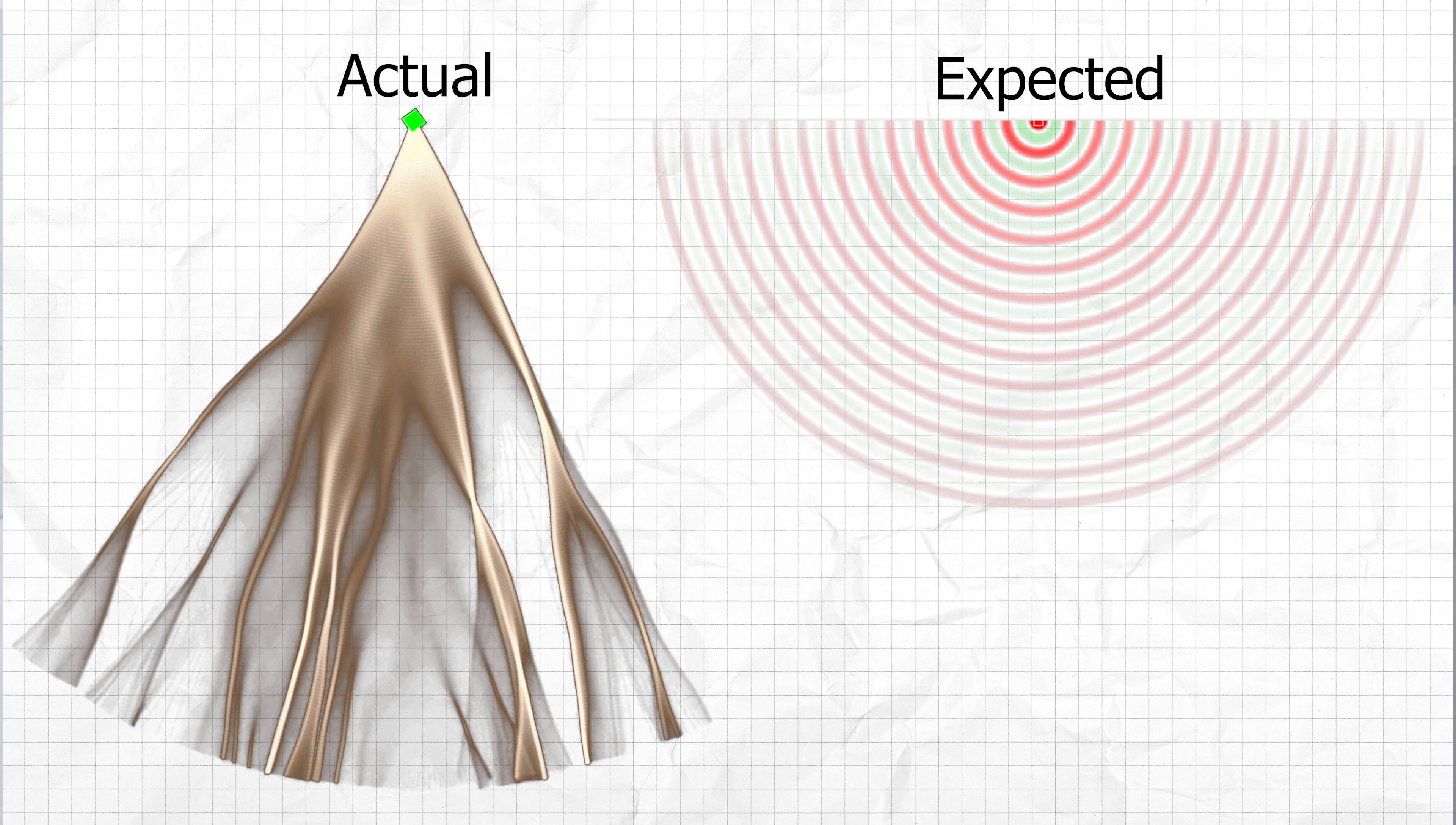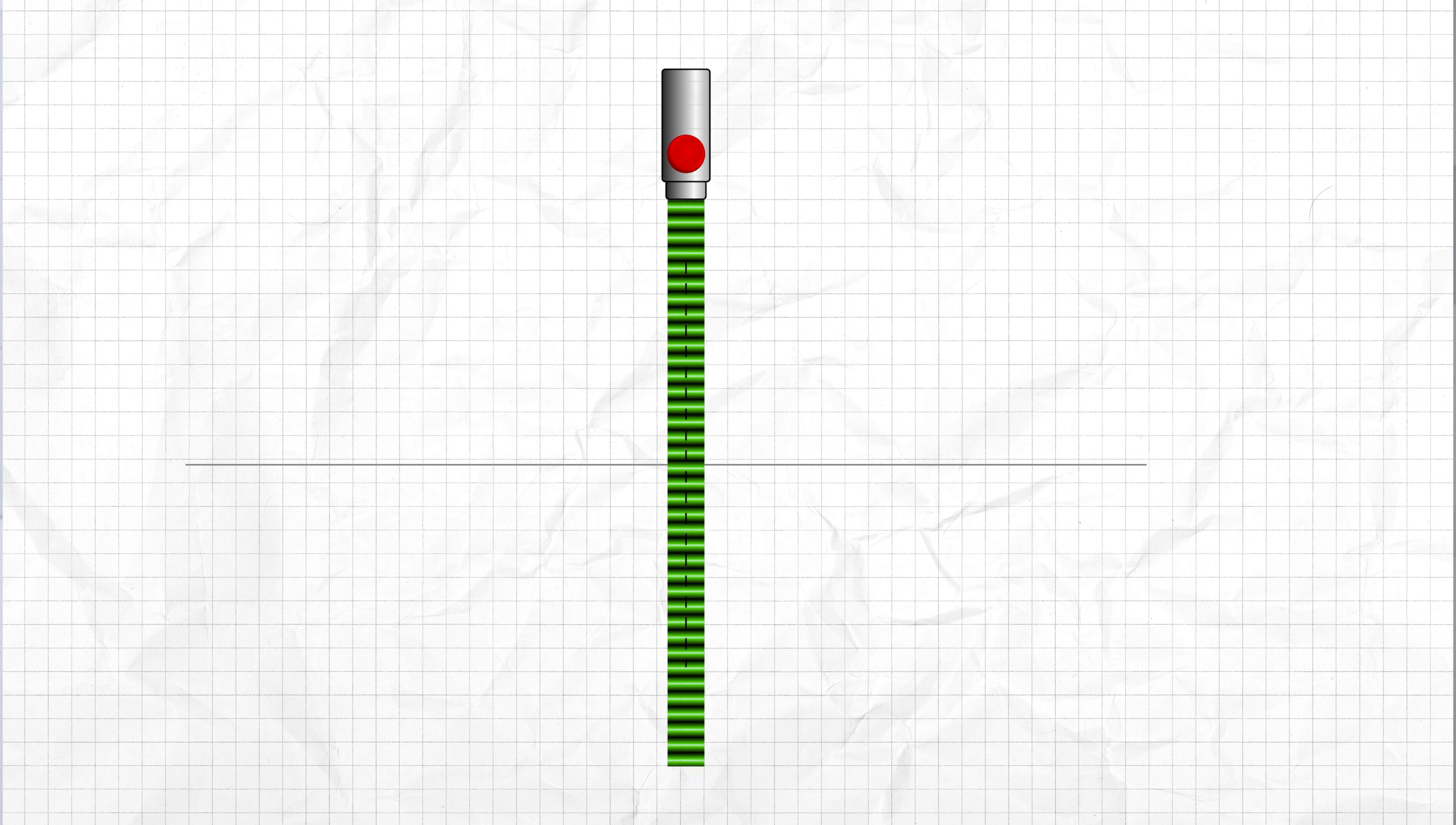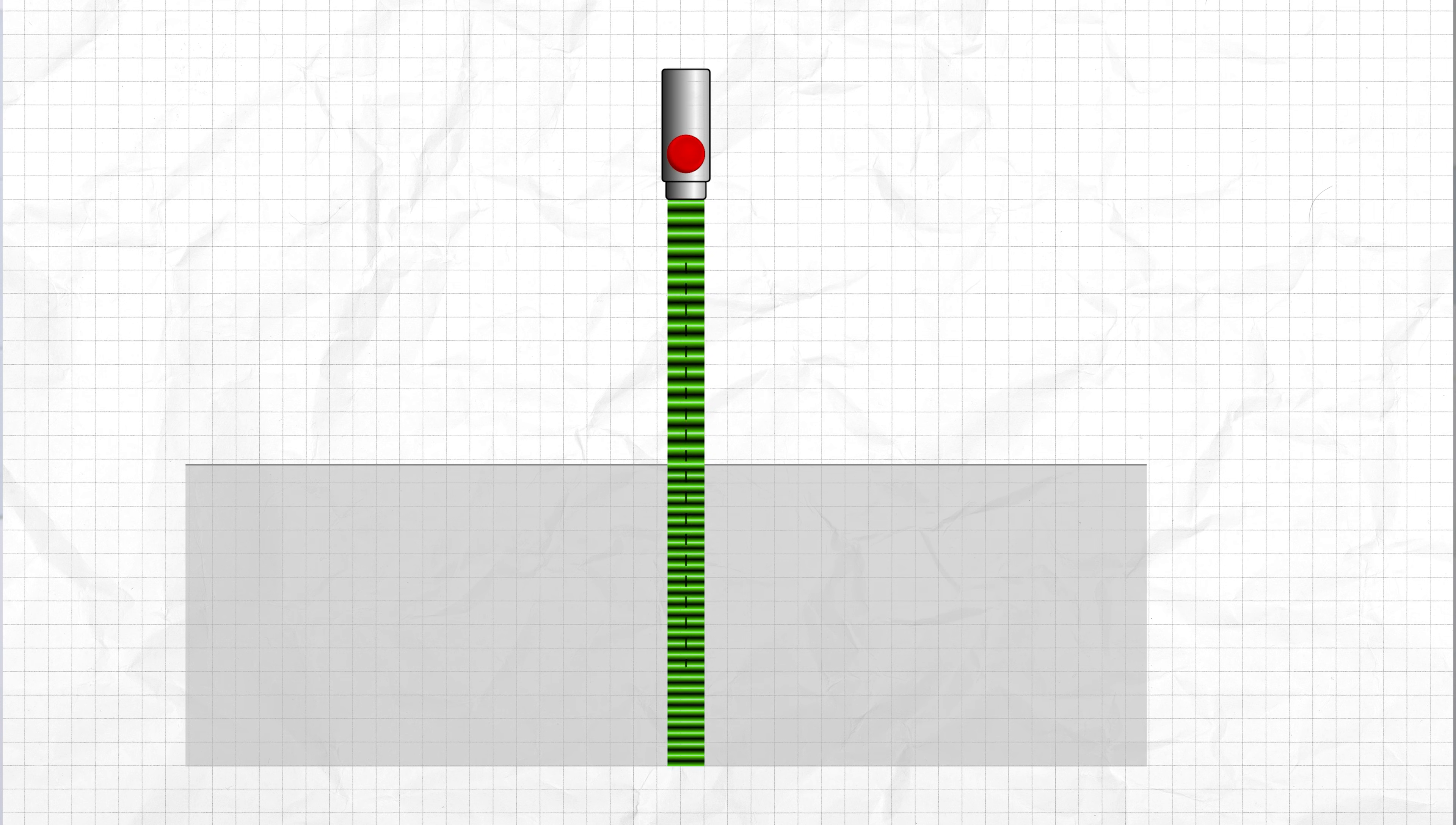But how do evenly distributed waves start forming distinct lines? Well, if you have a wave spreading through a medium that's completely uniform, then you have predictable wave mechanics that guide the wave through the medium.